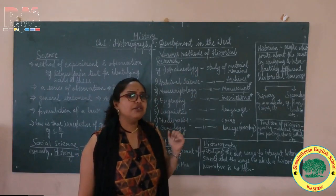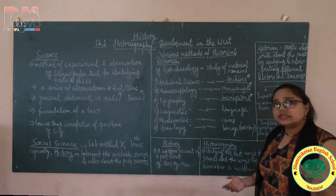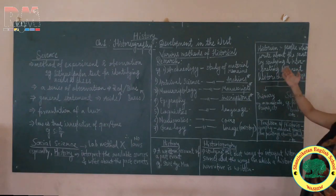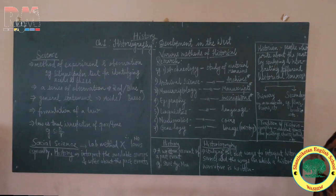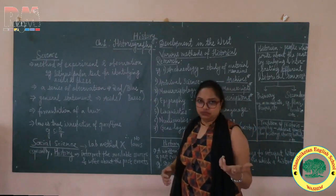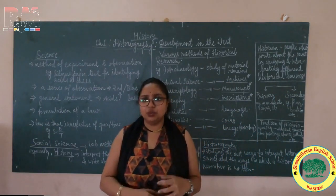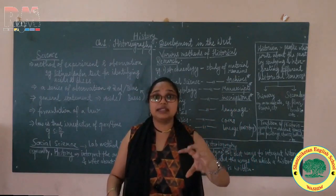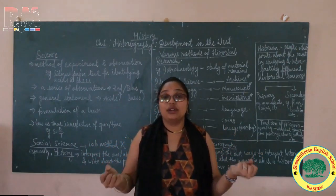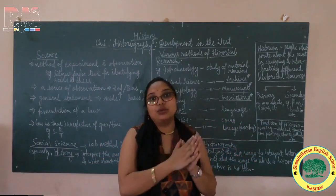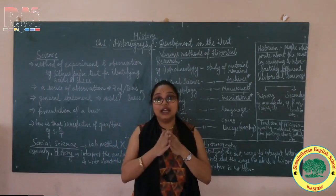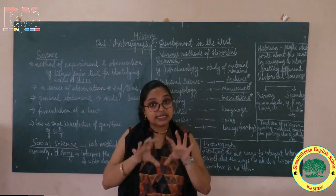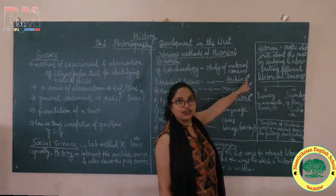A historian is a person who writes about the past by studying and interpreting different historical sources. For example, if some of you students have a great interest in history and want to conduct historical research — to find out what happened at a particular place and time — you will extract the available sources, go through all that information, carry out research, and write your own account. This person who writes their own account by studying and interpreting available historical sources is called a historian.